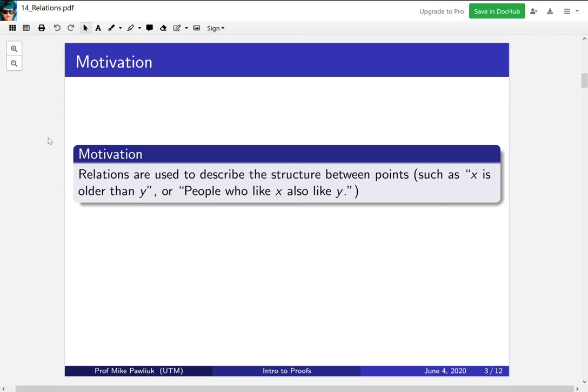Our motivation for talking about relations is that relations are used to describe the structure between points. For example, if you're talking about the relation between people, you might say x is older than y, or you might want to describe the relation people who like x also like y, which would be a way to relate products or movies.